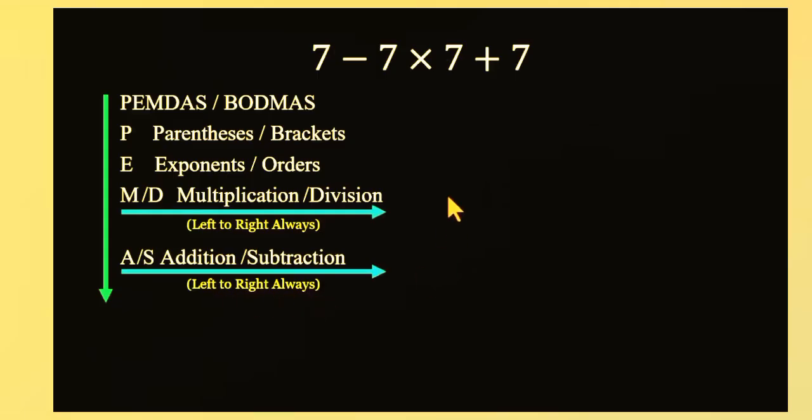Now let's solve it properly. In the expression, 7 minus 7 times 7 plus 7. No parenthesis. No exponents. So we start with multiplication. 7 times 7 equals 49. Now the problem becomes 7 minus 49 plus 7.